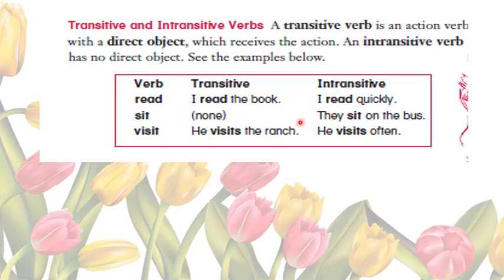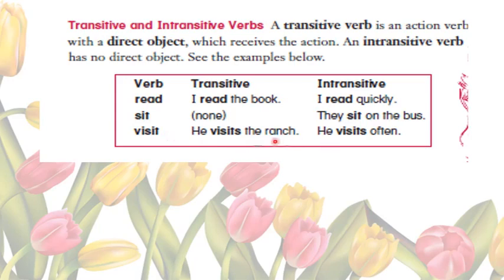The verb 'sit': 'they sit on the bus' — 'sit' can only be used as an intransitive verb; it cannot take a direct object. The verb 'visit': 'he visits the ranch' — what is being visited? The ranch. So 'visit' is transitive here. But 'he visits often' — what is being visited? We don't know, so 'visit' is intransitive. This shows that some verbs can be both transitive and intransitive.